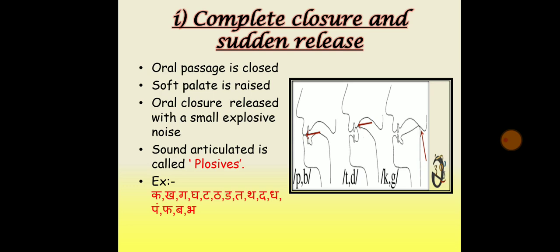For example, the initial sounds in the English words peel, pin, bin, tin, kin are plosives. The sounds represented by the Devanagari symbols क, ख, ग, घ, ट, ठ, ड, ढ, त, थ, द, ध, प, फ, ब, and भ are also plosives.